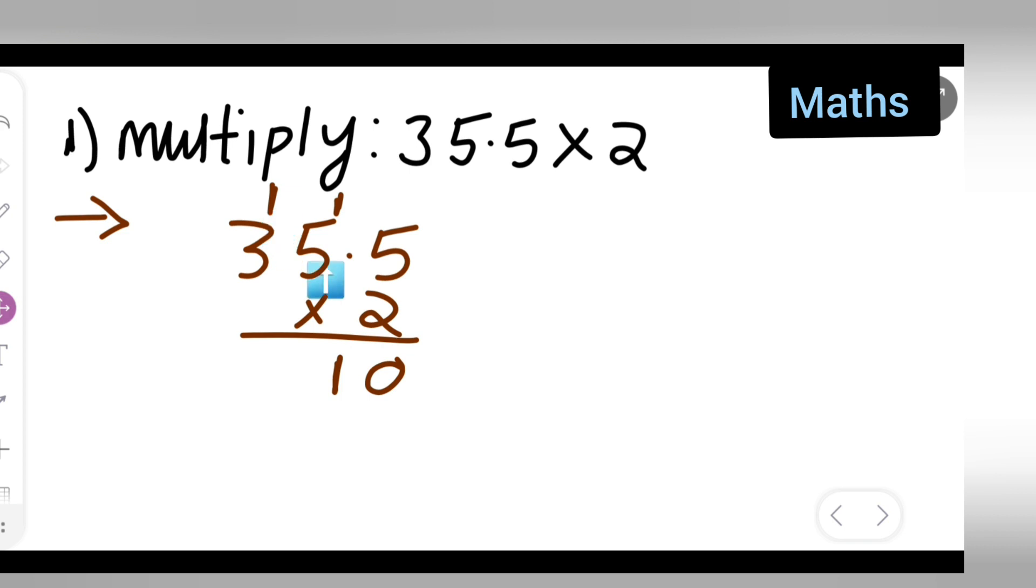Then two threes are six, plus one will give you seven. So what about the decimal point? Only one decimal point is there. Your decimal point will come right over here. Okay, therefore you all can...